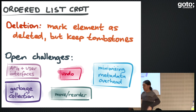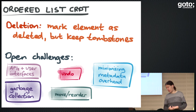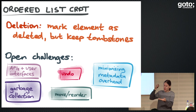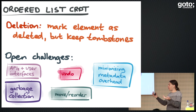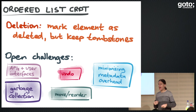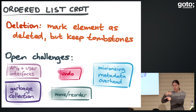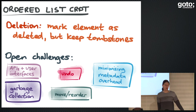We've got this CRDT, this data structure for ordered lists which several people can change at the same time. There are still a lot of open questions. The problem with deletion is we need to remember for a long time afterwards where a particular ID is, because we use IDs as pointers — an address in the list. If something gets deleted and we remove it entirely, an operation that comes in later to insert after that ID won't know where to put it. So we have to keep those tombstones. I also haven't talked about how to do undo, how to reorder elements in the list, or how to make all these IDs efficient. The basic algorithm is fine, but putting it into practice still needs a bit of work.